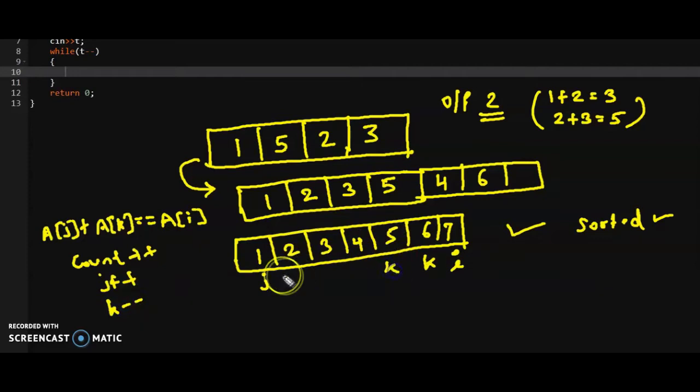So k will point to here, j will point to here. Now, similarly, I will check 2 plus 5 is equal to 7. Yes, right here. So I will increment the count and j plus plus and k minus minus. Until j is less than k, I will follow this. In the while loop, I will implement this until j is less than k. Similarly here, 4 plus 3 equals 7. I will increment the count and j, then condition will be false. Like this will be while loop.